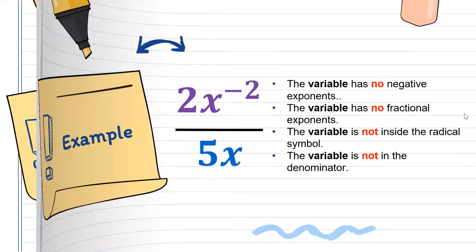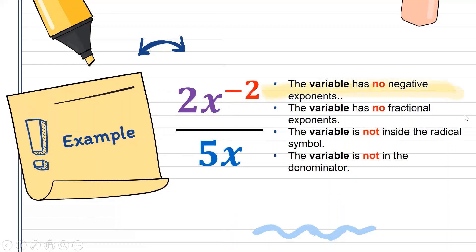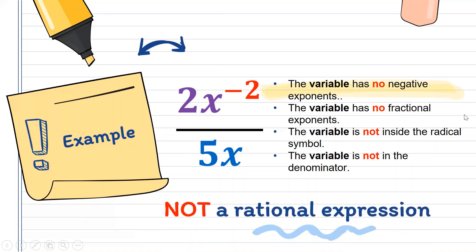Second example: 2x raised to negative 2, all over 5x. Checking the first condition — the variable has no negative exponent. This does not satisfy condition 1 because the exponent is negative 2. Therefore, this example is not a rational expression because the numerator is not a polynomial.